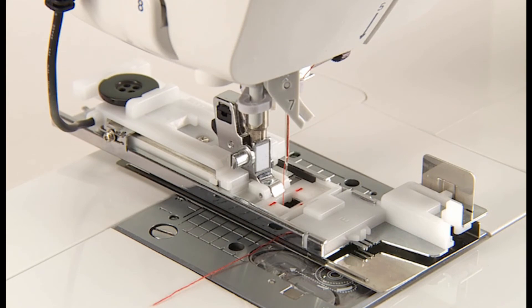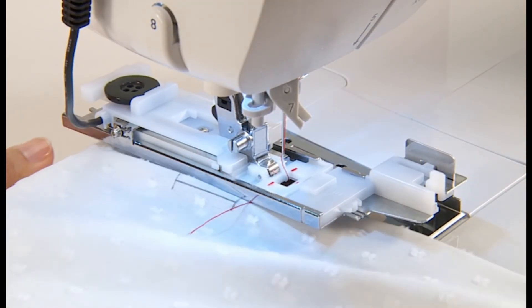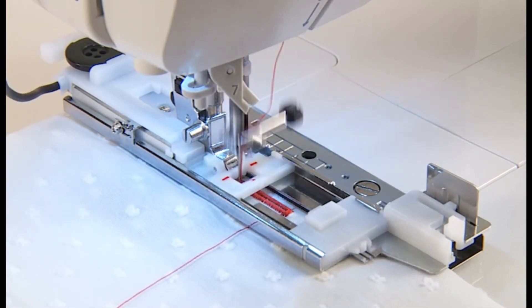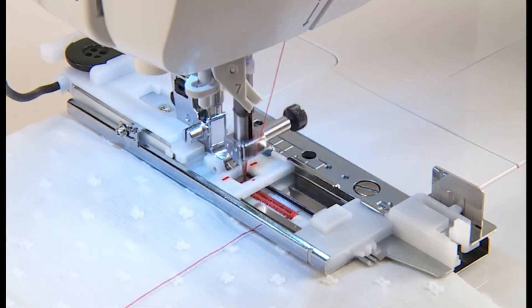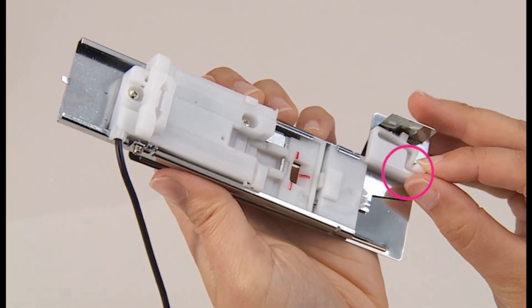Attach the buttonhole presser foot to the presser foot holder with the clamping plate together. Place the fabric between the presser foot and the clamping plate. You can remove the clamping plate by holding here.